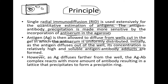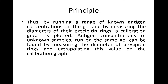As antigen diffuses farther from the well, the antigen-antibody complex reacts with more and more antibody, resulting in a lattice that precipitates to form a precipitating ring. The larger the ring, the greater the concentration of antigen. By running a range of known antigen concentrations on the gel and measuring the diameters of the precipitating rings, a calibration graph is plotted.